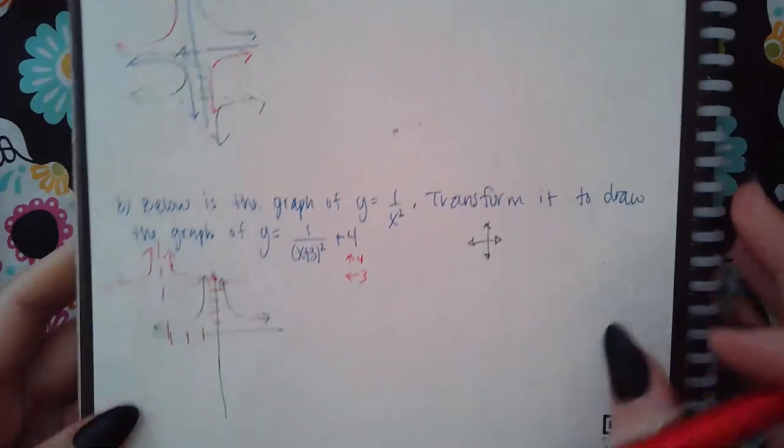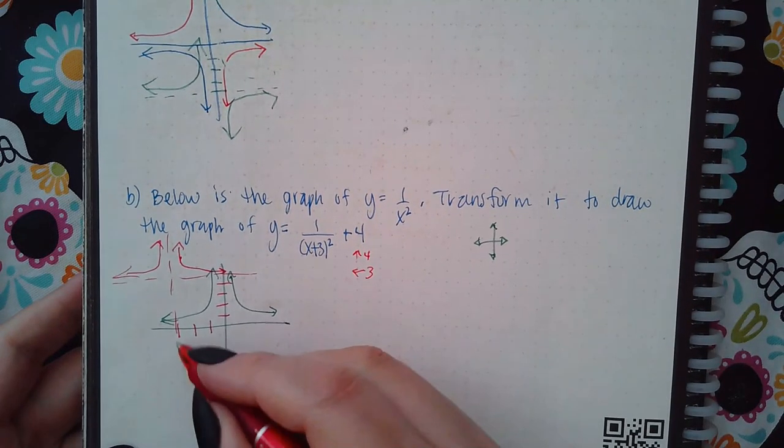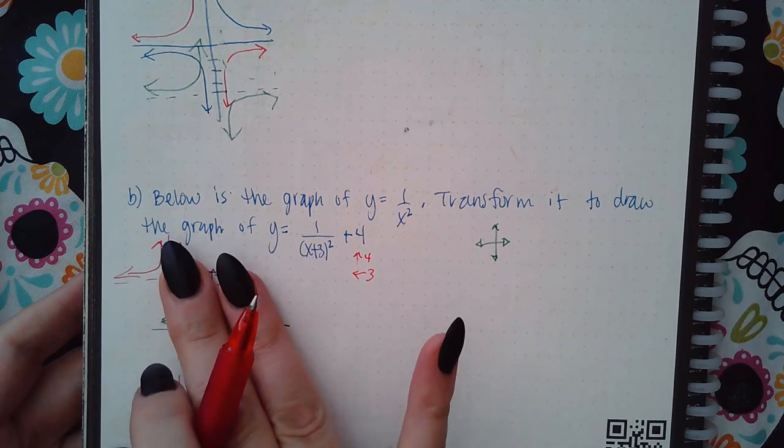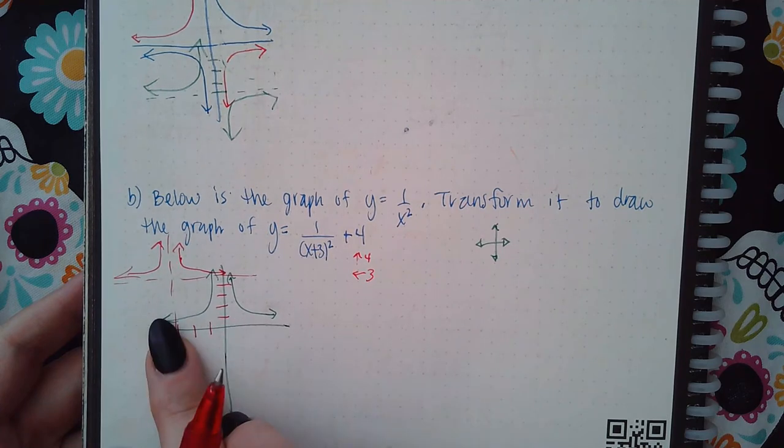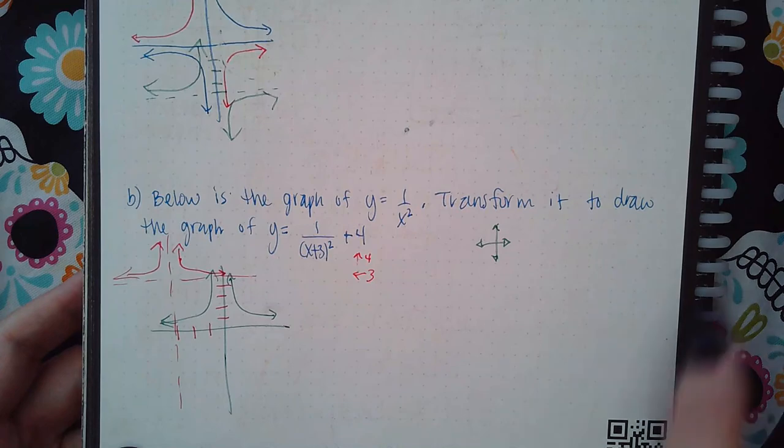Sorry if you can't see the whole graph. This was the original, and then what happened is it shifted the horizontal asymptote up four units and it shifted the vertical asymptote over three units, and so then these little pieces are now way up there on the left.